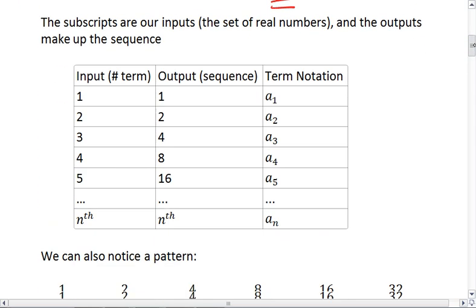We'll put this in a table to make it a little bit clearer. The subscripts on these a's tell us our input. It tells us what number term we're working with. So if it's the first term, I realize that in the sequence above, the output is 1. And so the term notation is a sub 1.